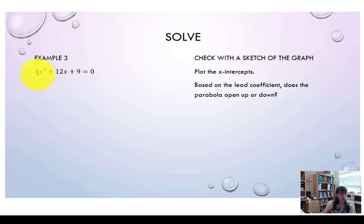For example 3, you can see we have 4x squared plus 12x plus 9 equals 0. Everything is in the proper order and equal to 0, so we can identify our values of a, b, and c from the quadratic equation.